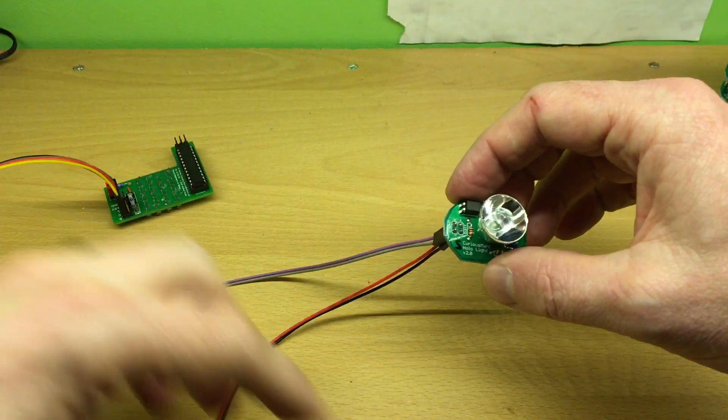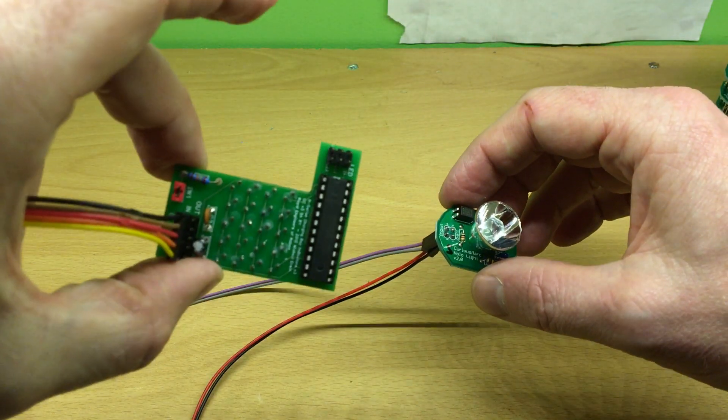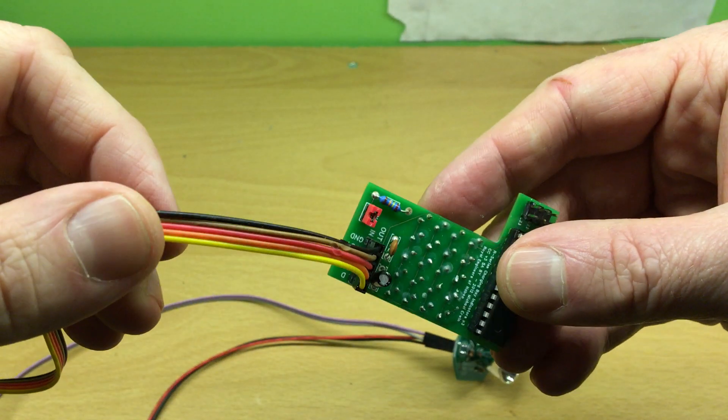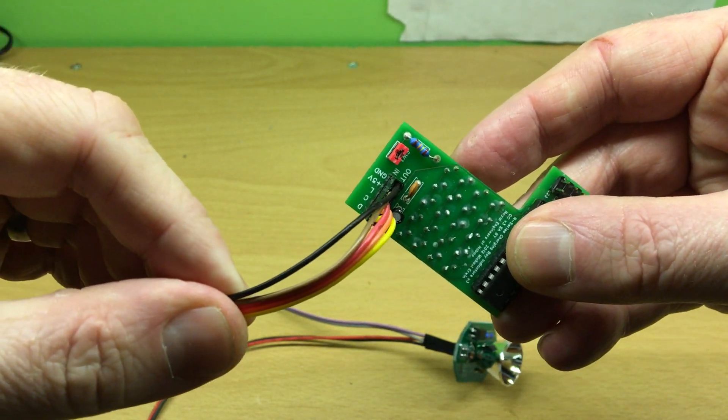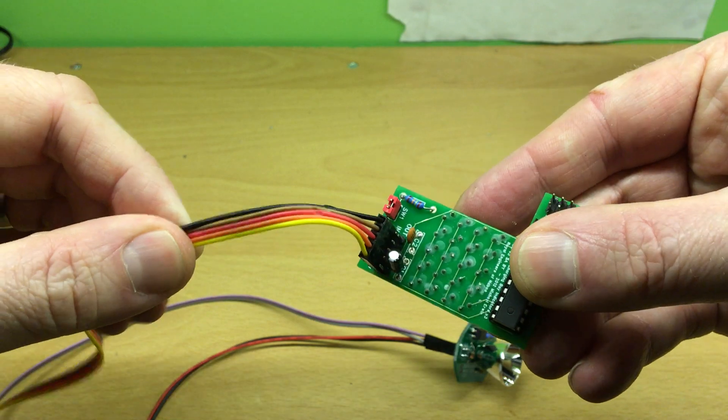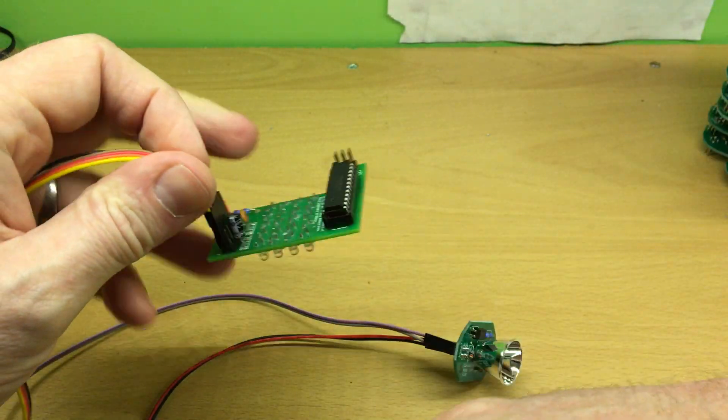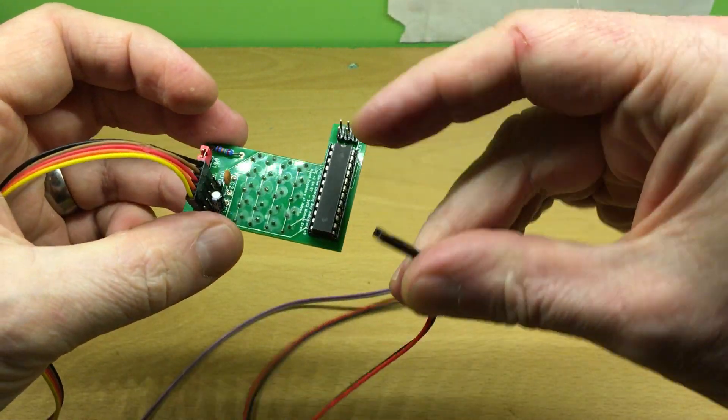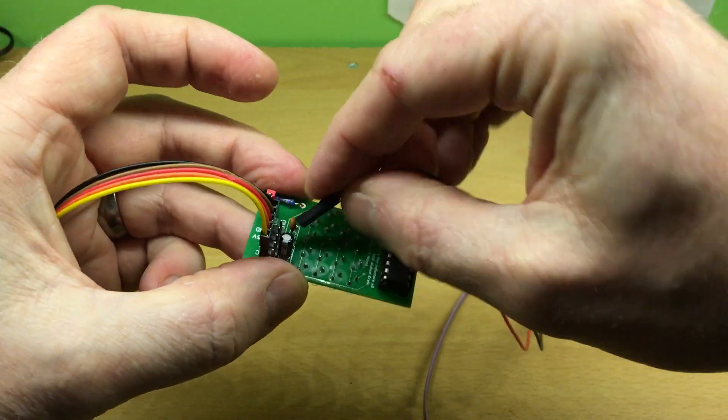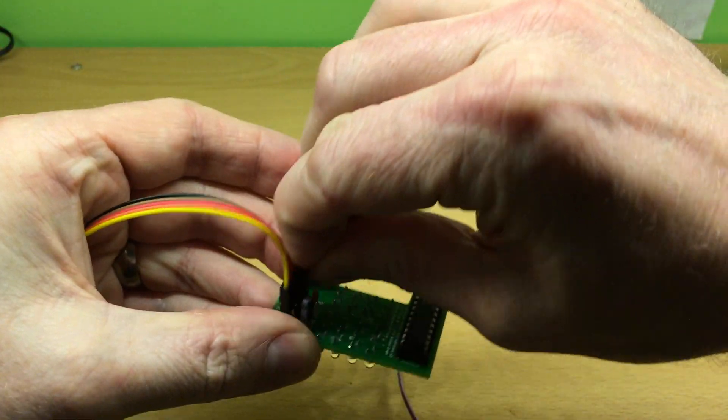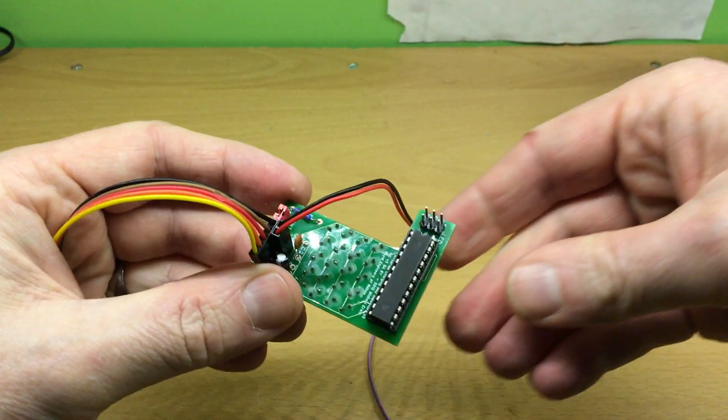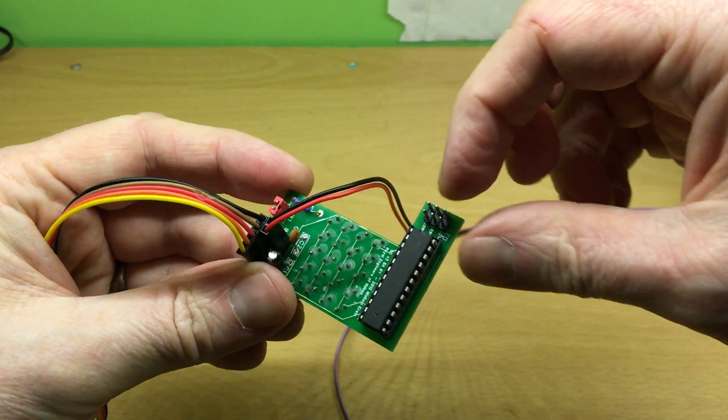Right, now on my board here, my charge indicator board, it's quite handy because it's got a plus 5 volt and a ground which I can borrow for the demonstration. So I'll plug my plus 5 volt and the ground onto there.